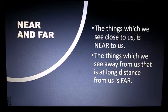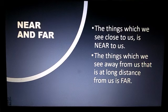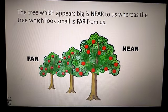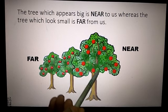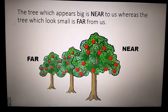Our first concept is near and far. The things which we see close to us is near to us and the things which we see away from us, i.e. at a long distance, is far from us. The tree which appears big is near to us whereas the tree which looks small is far from us.